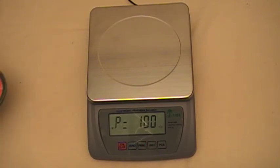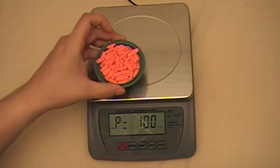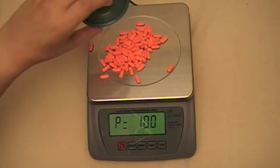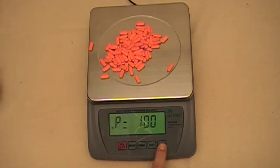I already counted out exactly 100 ibuprofen pills. I'm going to put those on the scale. Wait for the stable indicator to come on. Then press the pieces key again, and now the scale has averaged those at 100 pieces.